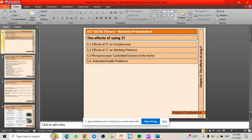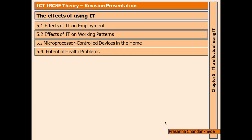Welcome back to another video. This is Prasanna with an ICT IGCSE theory revision presentation on the effects of using IT — chapter five. The topics covered today are: effects of IT on employment, effects of IT on working patterns, microprocessor control devices in the home, and potential health problems.